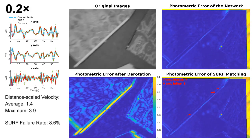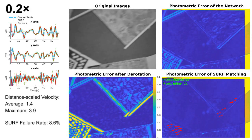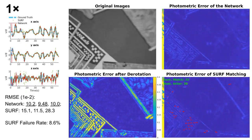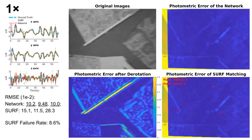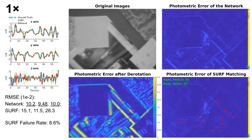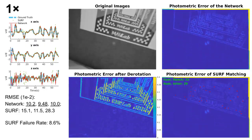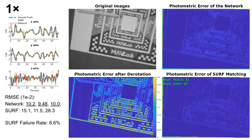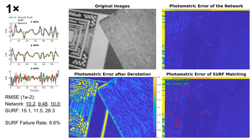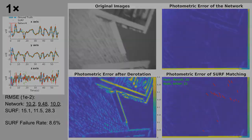By contrast, the neural network does not rely on the number of matchings and can perform prediction on every image pair, even those with little texture. Motion blur has little effect on the network's accuracy. According to our observation, the network's advantage over SURF grows with the flight speed.